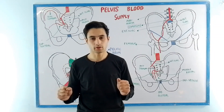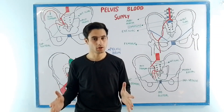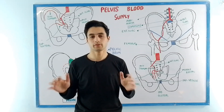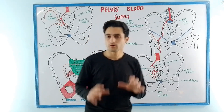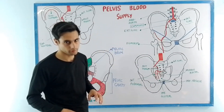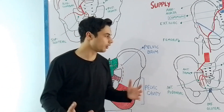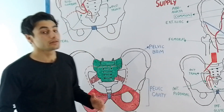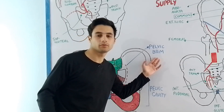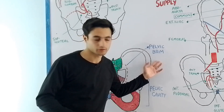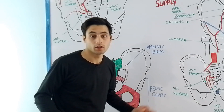Hey everyone, this is Dr. Kazi and in this video we're going to learn about the blood supply of the pelvis. There are various arteries involved in the blood supply to the pelvic walls. Some arteries are in relation with the pelvic brim and some arteries are related to the pelvic cavity.